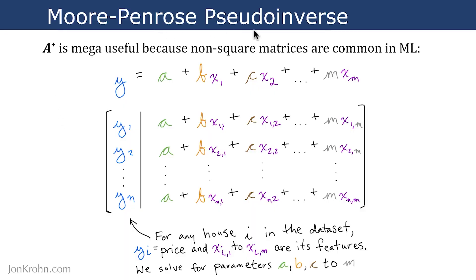The Moore-Penrose pseudoinverse, which we denote, say for the matrix A, as A superscript plus, is mega useful because non-square matrices are common in machine learning.